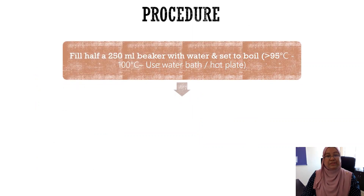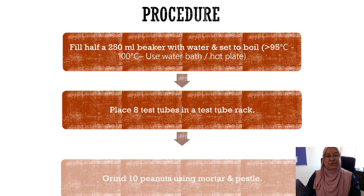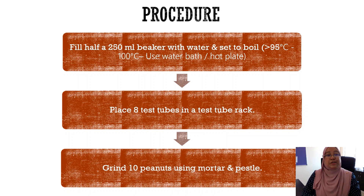Now let's have a look at the procedures. Fill half a 250 ml beaker with water and set to boil — make sure the temperature must be above 95 degrees Celsius. Place eight test tubes in a test tube rack and grind 10 peanuts using a mortar and pestle.